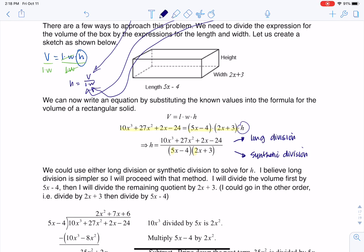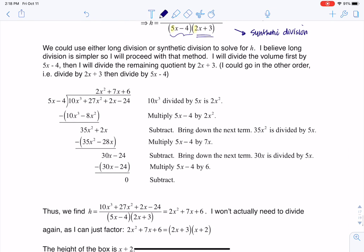I'm just going to use this first binomial, 5x minus 4, to do my initial division. I could just have easily done 2x plus 3, I'm just going to go with 5x minus 4. So I'm going to set up my long division. I've got my volume expression here and I've got my length expression here. So let's start doing this.